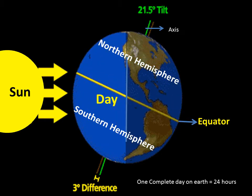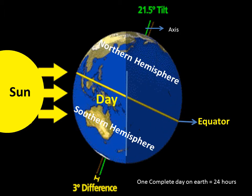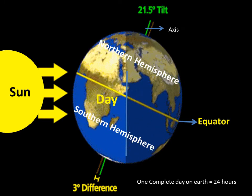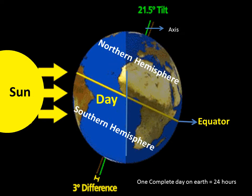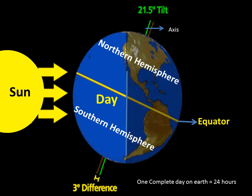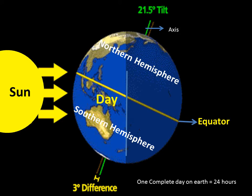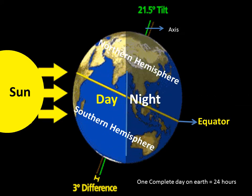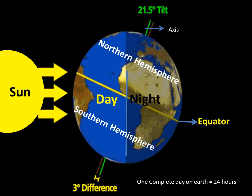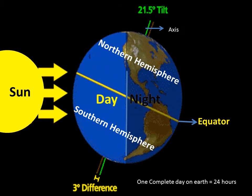As the earth rotates, the part of the earth facing the sun gets light, so in these areas we have day. The opposite side of the earth which does not get the sun's light has night. During the 24 hours the earth takes for one rotation, every part of the earth will have day and night. In short, one complete day on earth is 24 hours. The earth spins continuously so we have a continuous cycle of day and night.